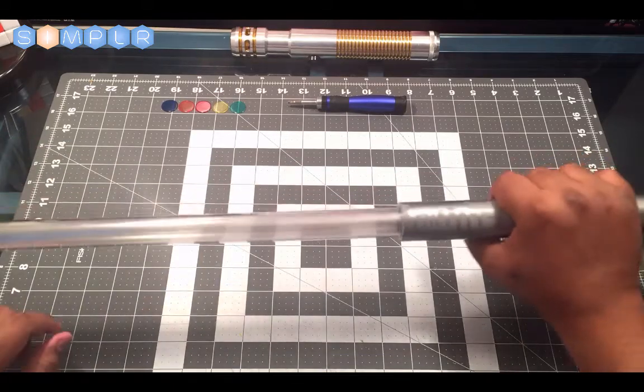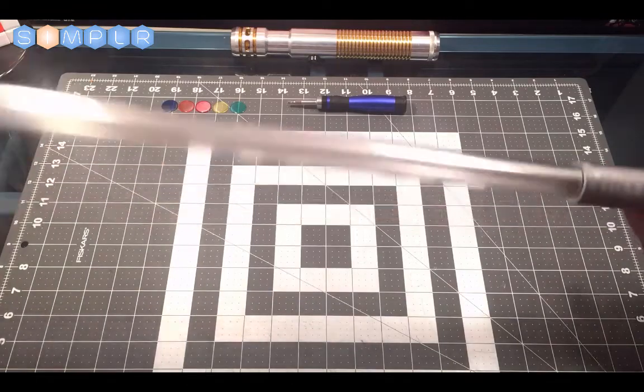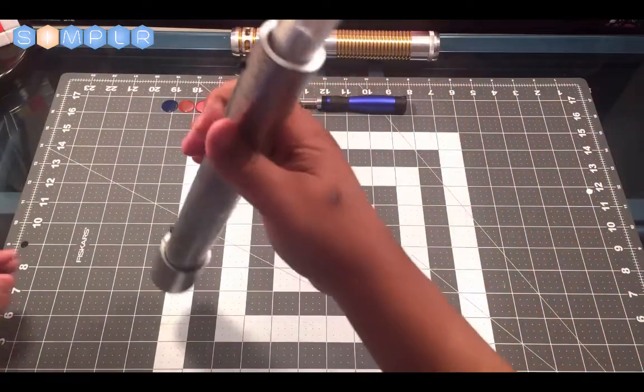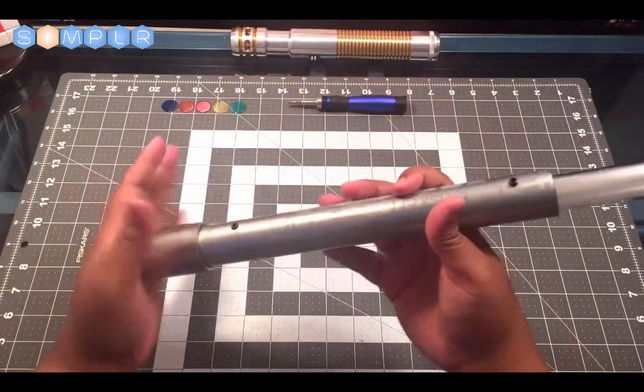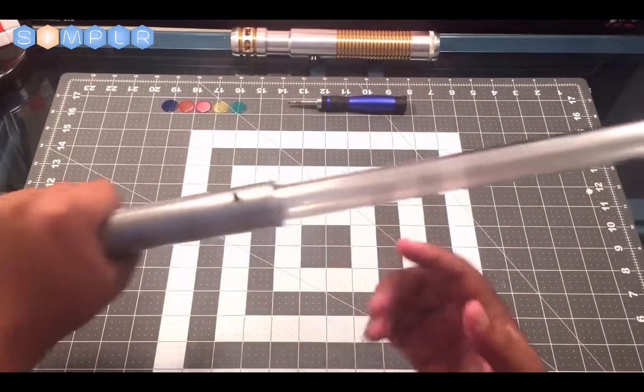So there you have it, everything is put together properly. You have the pommel, your hilt, and your blade.